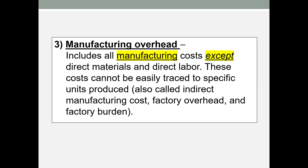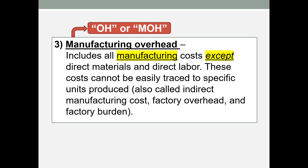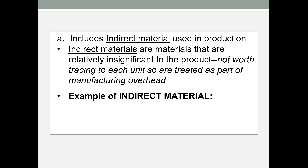Manufacturing overhead includes all other manufacturing costs. First, it has to be a manufacturing cost, and second, it is not direct material or direct labor — so it's everything else. These costs cannot be easily traced to specific units. They're often called indirect manufacturing costs, factory overhead, or factory burden. I will abbreviate this as OH or MOH. Overhead includes indirect material: if you can't trace a material easily to each unit, you classify it as an overhead cost.